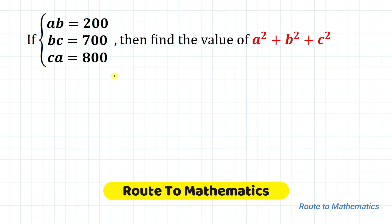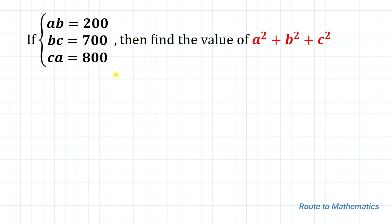Hello everyone, welcome to Root 2 Mathematics. In this video, we're going to solve an interesting system of equations. We are given ab equals 200, bc equals 700, and ca equals 800, and we are asked to find the value of a² + b² + c².